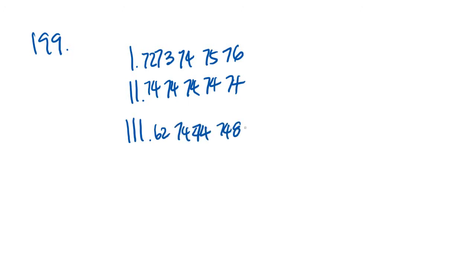199 gives us 3 data sets. So here are the 3 data sets: 72, 73, 74, 75, 76. We have 74, 74. And finally, 62, 74, 74, 74, and 89. So we have these data sets 1, 2, and 3. And they're saying we want to order them from greatest standard deviation to least standard deviation.